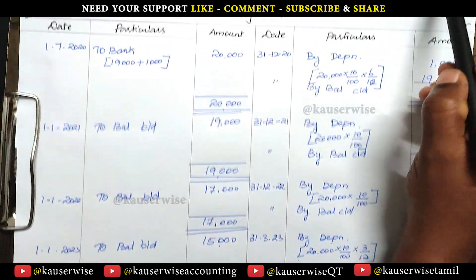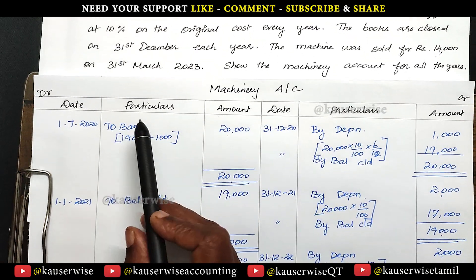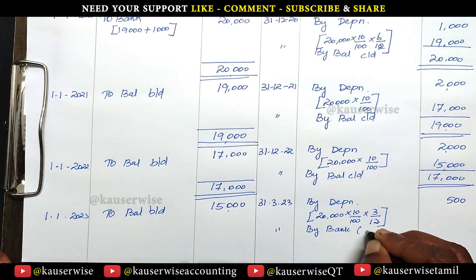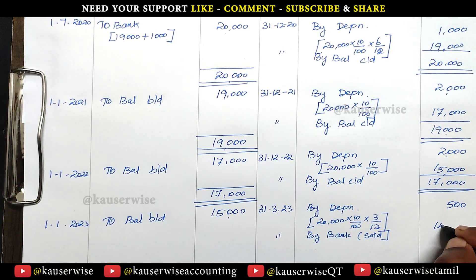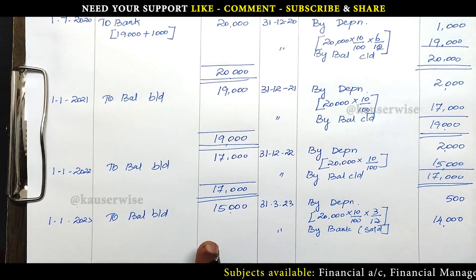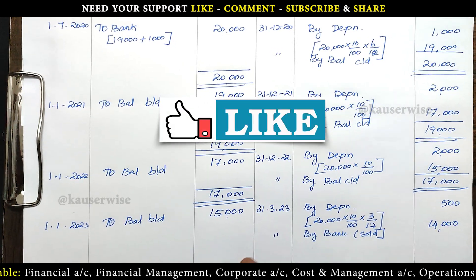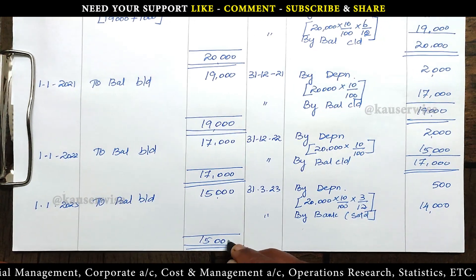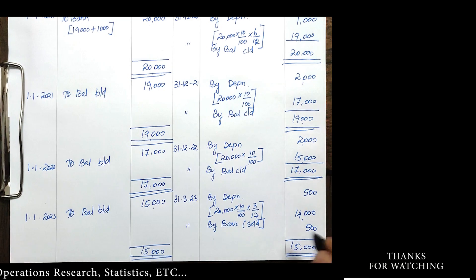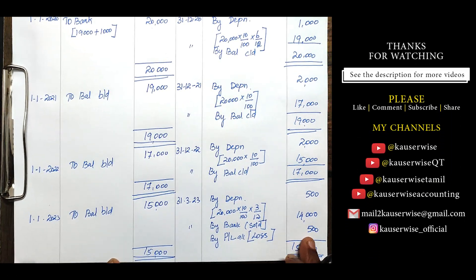Now we enter the sale entry. Selling price is 14,000. When we purchase an asset the entry is machinery debit to bank; when we sell the asset it is the opposite — bank debit to machinery. On the same day, by bank 14,000 for sale of asset. Now get the balancing figure — the debit total is 15,000, but the credit side has only 14,500 (depreciation 500 plus sale 14,000). The balancing figure is 500, which is a loss. This loss on sale of asset of 500 will be transferred to profit and loss account.